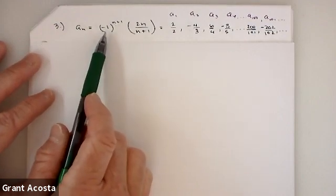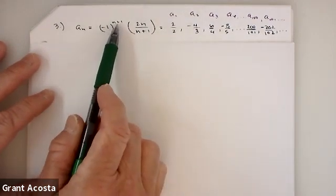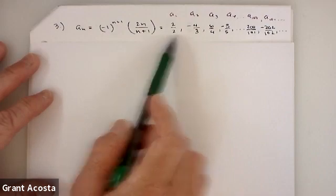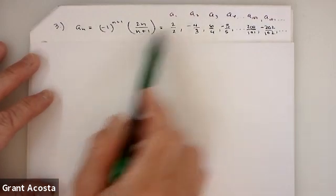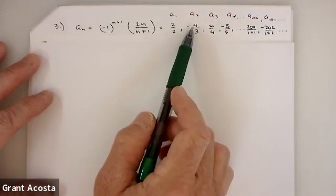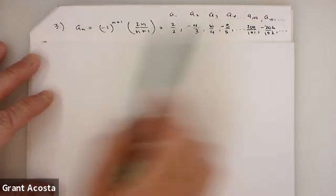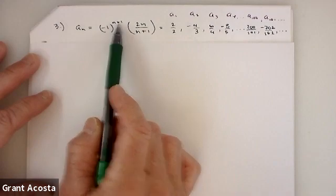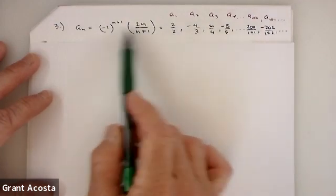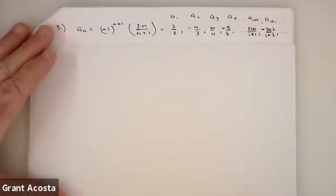And what that does, if you start with 1, negative 1 to the 1 plus 1 is negative 1 squared, which is just positive 1, and then you get 2 over 2 for your first term. But when n is 2, this becomes negative 1 to the third power, which is negative 1. And then you plug in there, you get 4 thirds. When n is 3, negative 1 to the fourth is positive 1, and then plugging in 3 here, you get 6 over 4. So what you can see is that this negative 1 to the n plus 1 actually just acts like a sign changer.